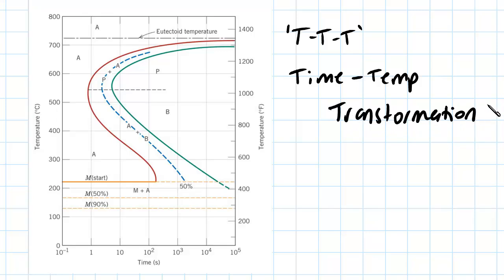So just an easier way really of saying isothermal transformation diagram, because that's what we're measuring, right? So we have the temperature here on the y-axis. We have the time here in seconds on the x-axis, and this is in a logarithmic scale. So 10 to the power of negative 1, 0, 1, 2, 3, 4, 5.